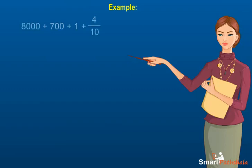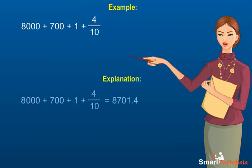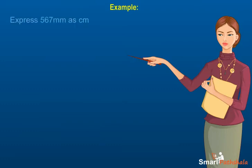Example: Write as decimal: 8000 plus 700 plus 1 plus 4 by 10. Explanation: We have 8 thousands, 7 hundreds, 0 tenths, 1 ones, and 4 tenths. The decimal form is 8701.4.